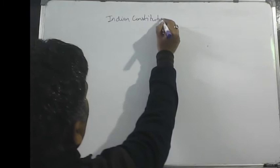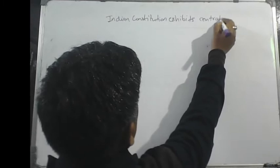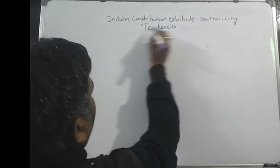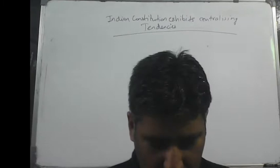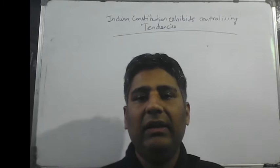Hello students, now we will take question number 11 of GS Mains Paper 2. The question is: Indian Constitution exhibits centralizing tendencies. Centralizing tendency means our Constitution actually gives more powers to the center as compared to the states.